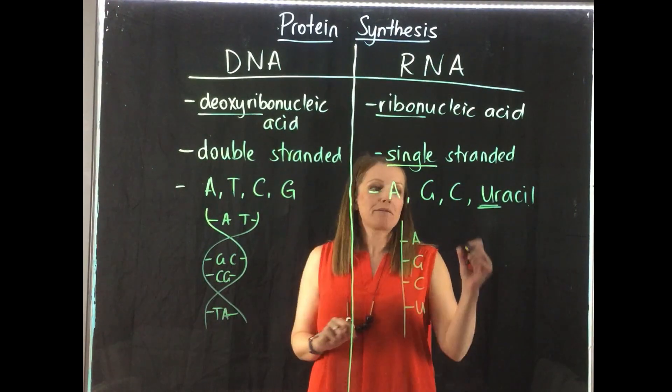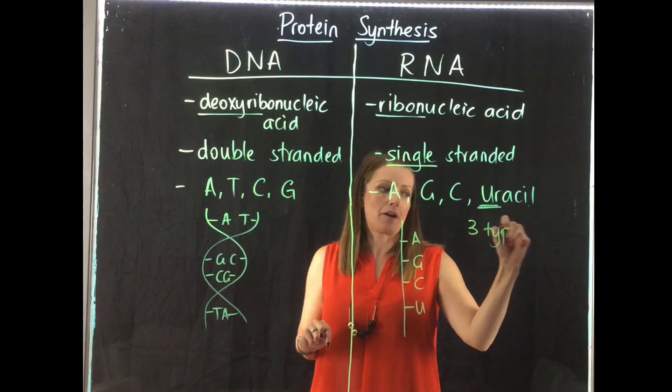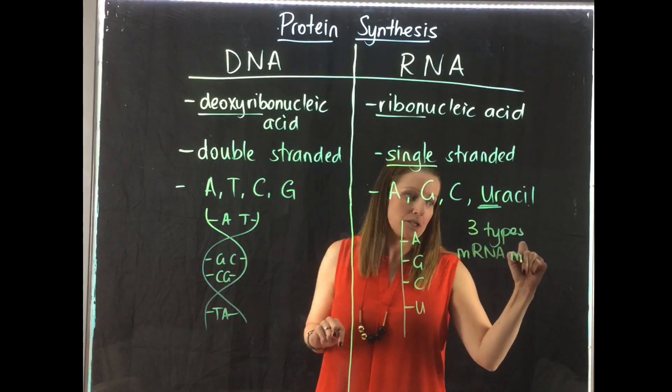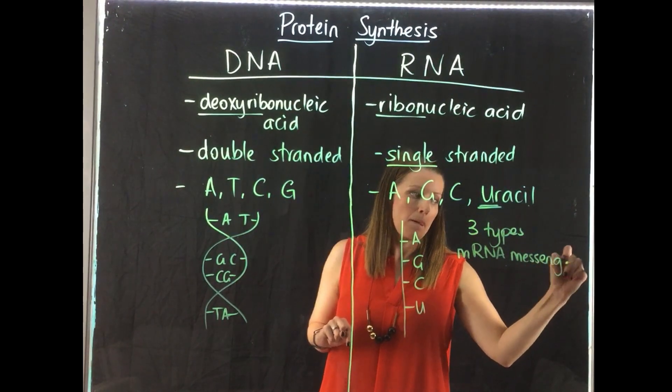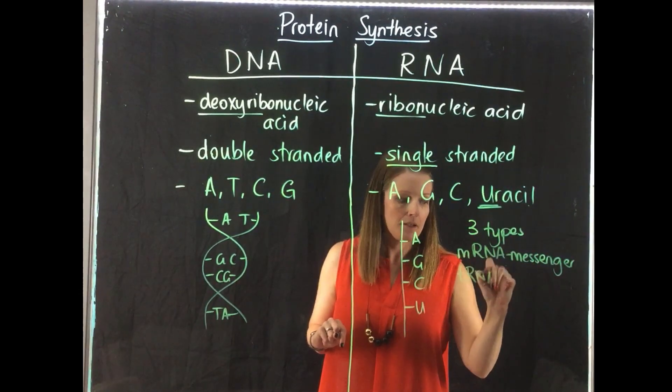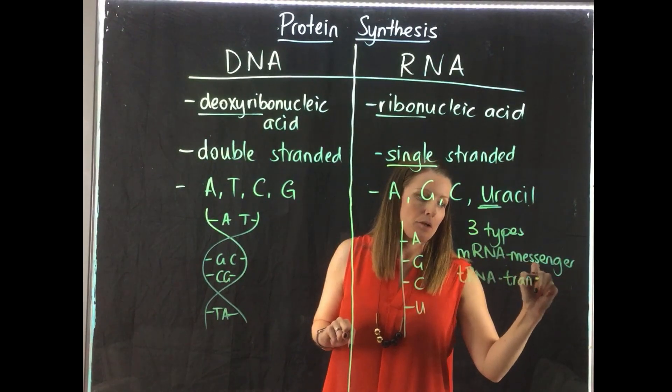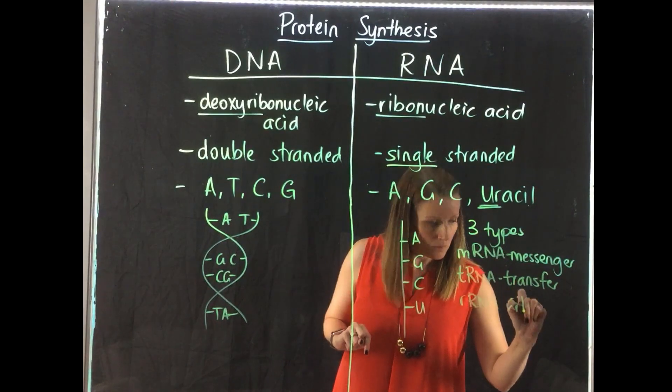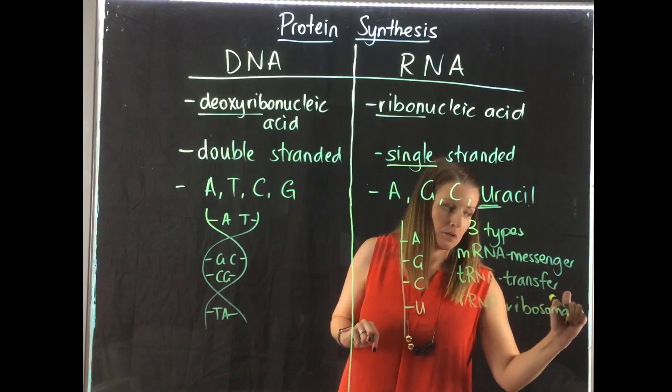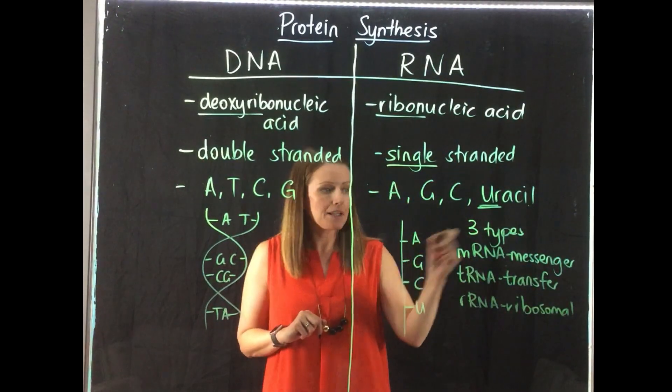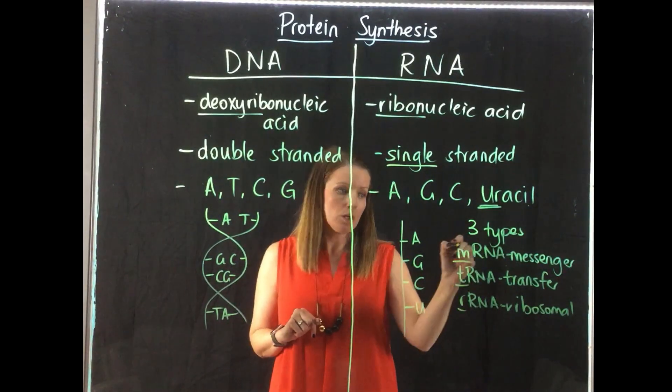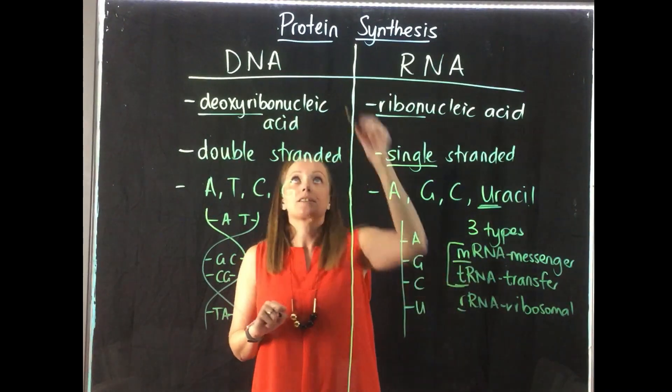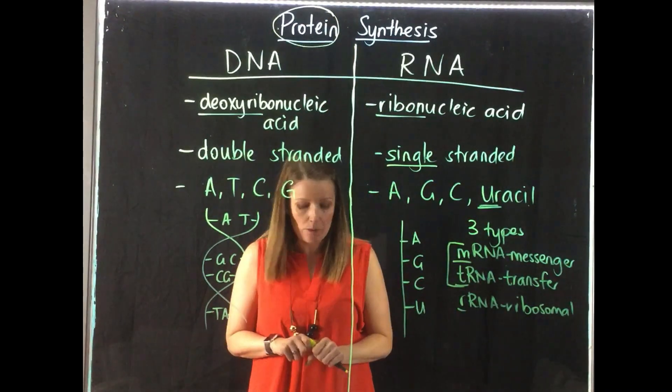The other big difference as well, we have three different types of RNA. We have mRNA, which is messenger RNA. We have tRNA, which is transfer RNA, and we have rRNA, which is ribosomal RNA. And in a minute, we'll go through what each of these three things do. The two that we need to focus on the most are messenger RNA and transfer RNA, as they will help us create our proteins.